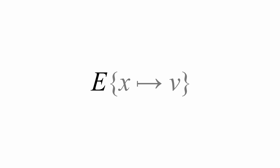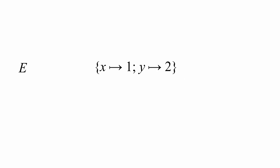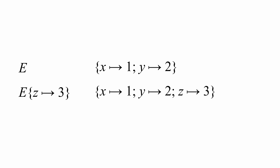We can use a symbol like the letter e to stand in for an environment. When we use notation like this, we're describing the environment we get when we take the environment e and augment it to map the variable x to the value v. So for example, if e were this environment and we augmented it so that z maps to 3, then the result would be an environment where x maps to 1, y maps to 2, and z maps to 3.